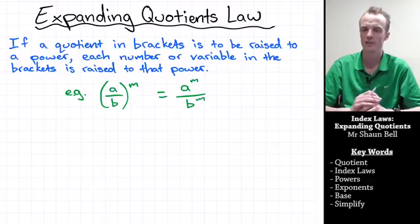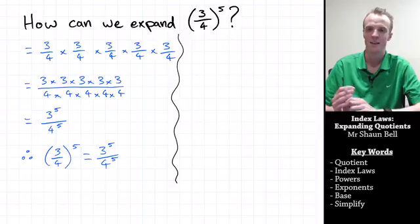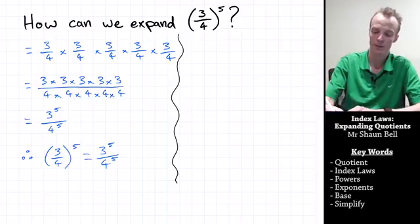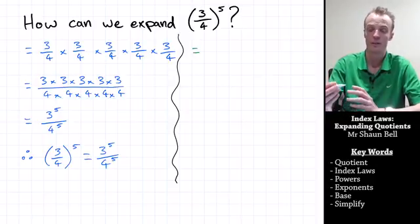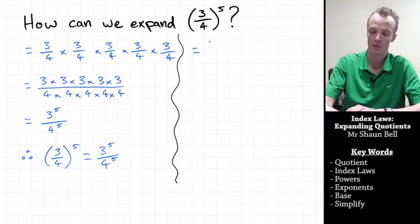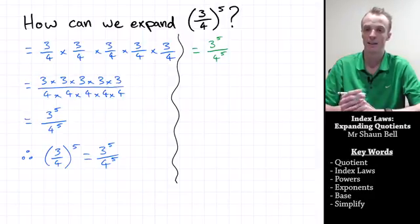Let's take a quick look at those first three problems using the law instead. Back to our first problem: we had 3 over 4 all raised to the power of 5. Our law says that if we've got a quotient raised to a power, we apply that power to both the numerator and the denominator. So that's going to be equal to 3 to the power of 5 over 4 to the power of 5. If we leave this in index form, this problem is as simplified as it can get.